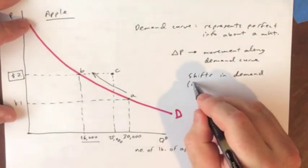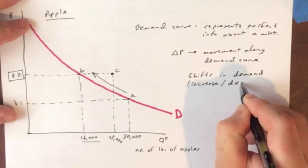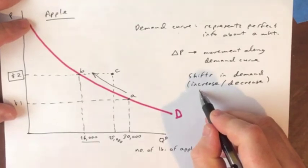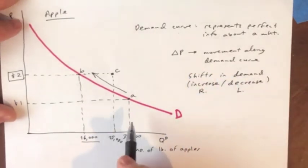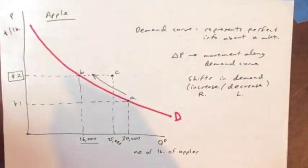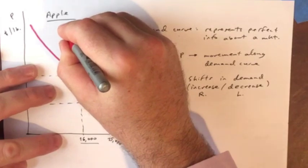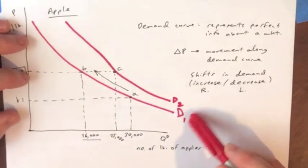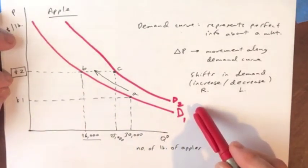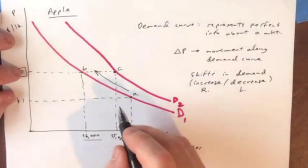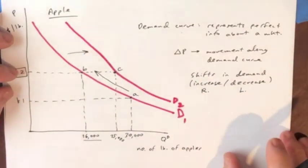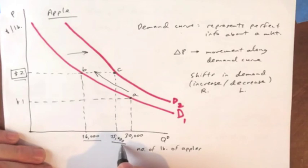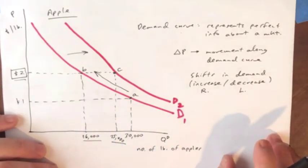And this brings us to a shift in the demand curve. Shifts in demand, by that we mean either an increase or a decrease. And I want to encourage you to think about these in terms of right versus left. In our example here, getting to point C means that we've got a new demand curve going on here, D1 to D2. It has shifted to the right. And we can see this is an increase because at the same price, people are buying more than they were before, twenty-five thousand versus sixteen thousand.